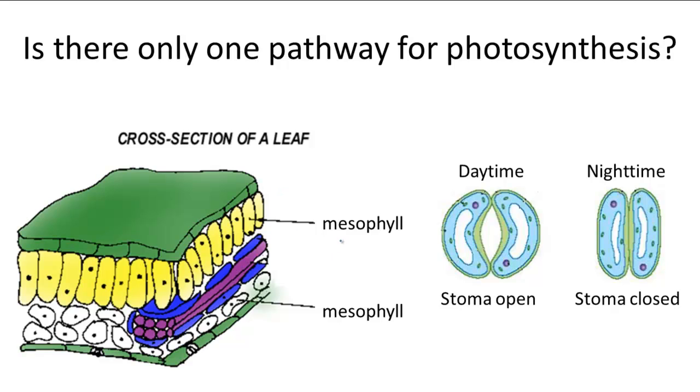Photosynthesis usually occurs in the mesophyll cells of the leaf, and during the day, the stomata on the underside of the leaf stay open to let CO2 pass in and O2 pass out.